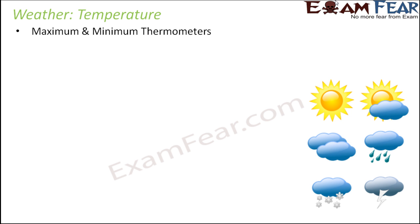We will first talk about temperature. How do we measure the temperature of the environment? We know that in summer the temperature is more and in winter it is less. Similarly, during early morning the temperature is low — that's why we feel cold — but by afternoon it becomes quite hot and the temperature is high.